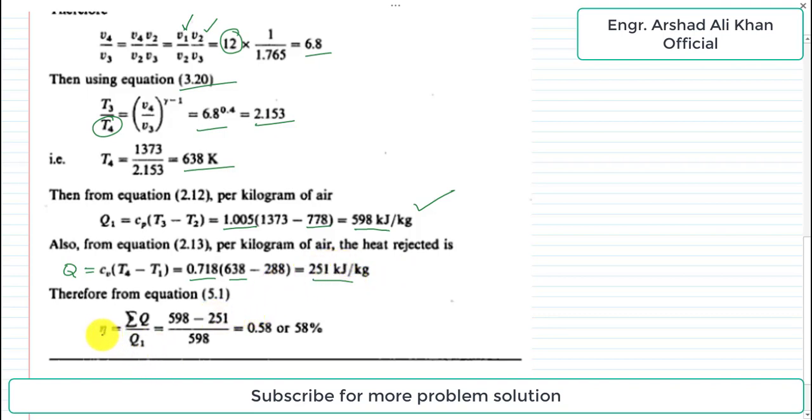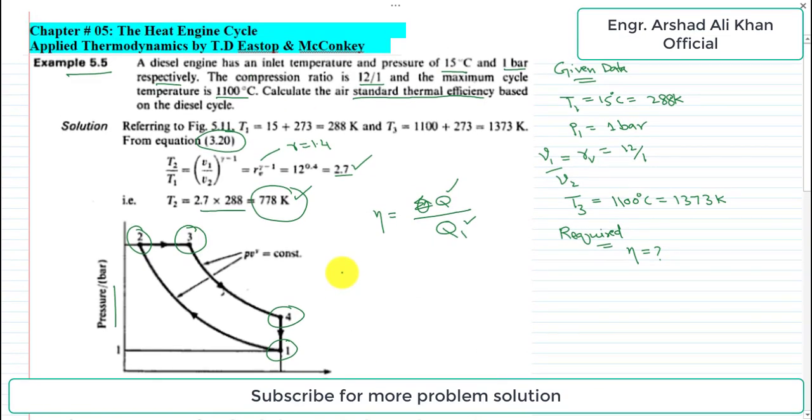Using the formula for thermal efficiency of the diesel cycle: eta equals net heat divided by heat supplied. Net heat equals Q1 minus Q. Substituting values: eta equals (598 minus 231) divided by 598, which equals 0.58 or 58 percent. This is the thermal efficiency for this diesel engine. Thank you.